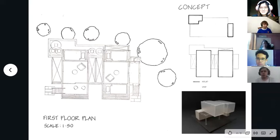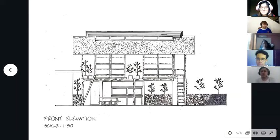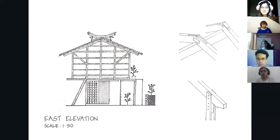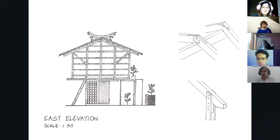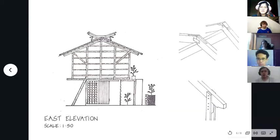Moving on to the front elevation and the east elevation — these are fairly self-explanatory. On the right, there are two types of joints and joineries mainly used: the ridge connection and the post-beam connection.